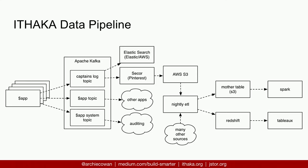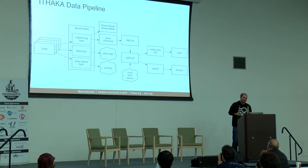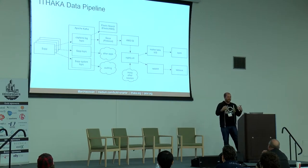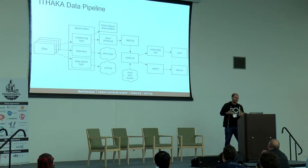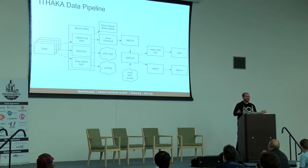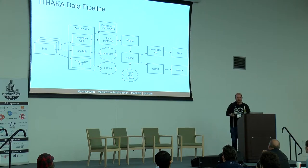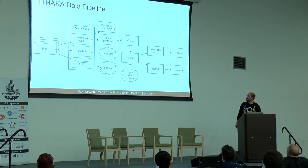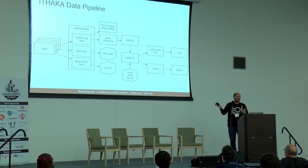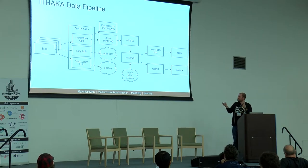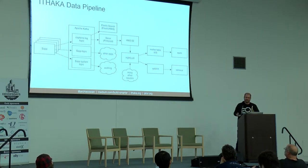Finally, this is our data pipeline that I'm going to walk you through. All of those applications we mentioned emit events that we eventually need to show to a library to describe how their patrons are leveraging JSTOR. A librarian needs to know: are my patrons being successful with this database product we're subscribing to, and should we adjust how we're using it? So they need a lot of information. We have a lot of applications, we deploy a lot, and we need to bring all that data together and report on it.